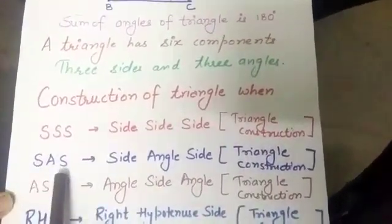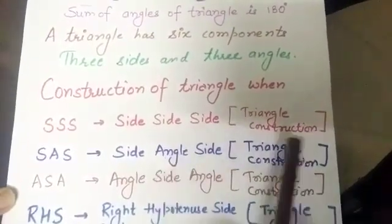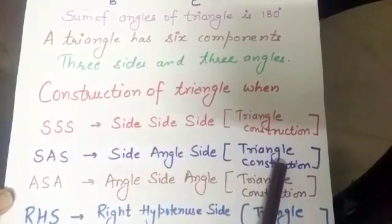The second is SAS, side, angle, side when two sides and included angle is given to us for triangle construction.